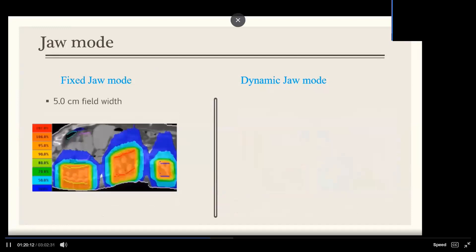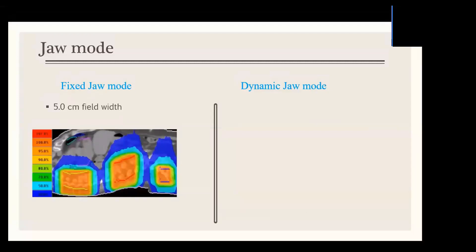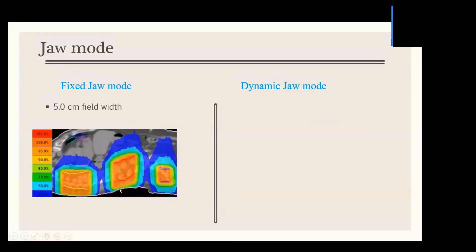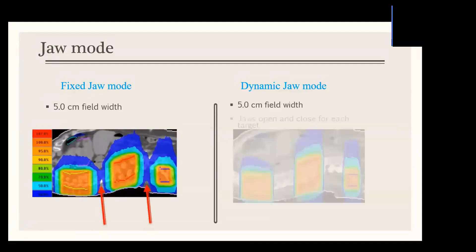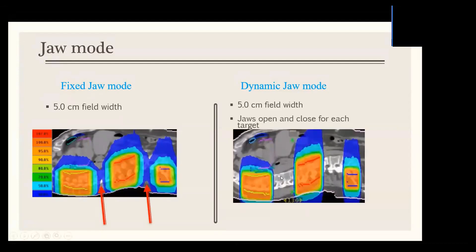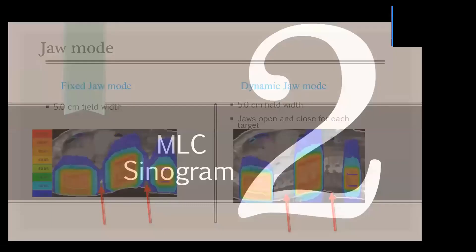Here is a clinical example: a plan for spinal mets. On the right side, we used a fixed jaw mode with 5 cm, and as you can see in this dose color wash, there is spillage between the two targets. When we re-planned this case using dynamic jaw mode with the same field size, we were able to eliminate the dose between the two targets. This is due to the sharp penumbra associated with dynamic jaw mode.